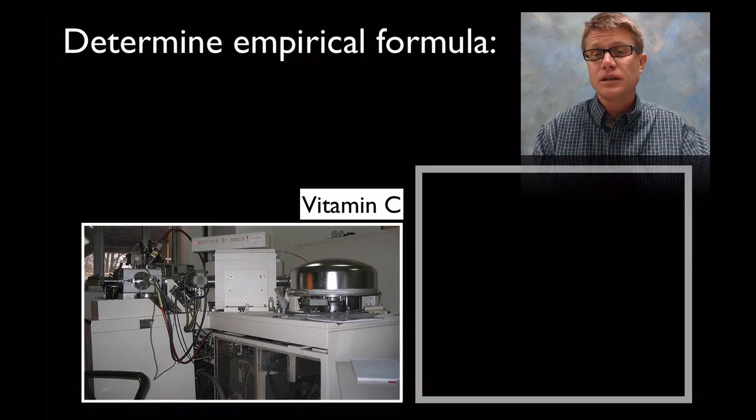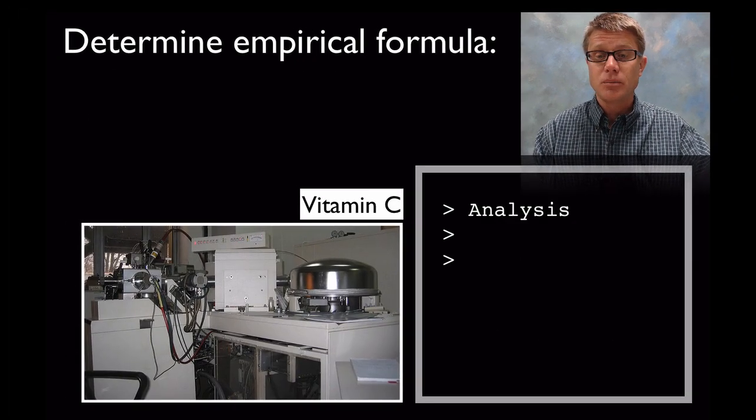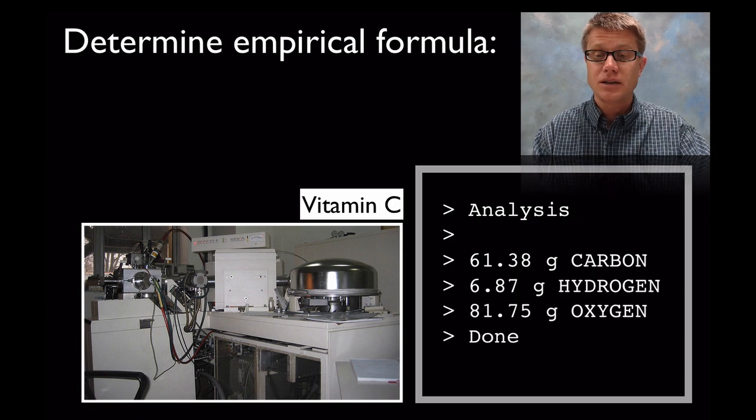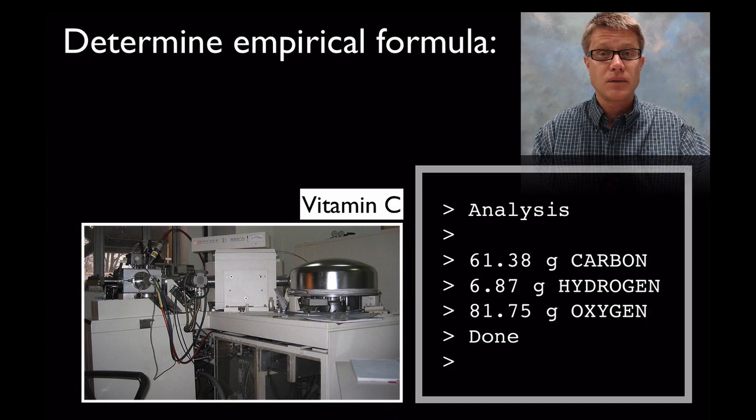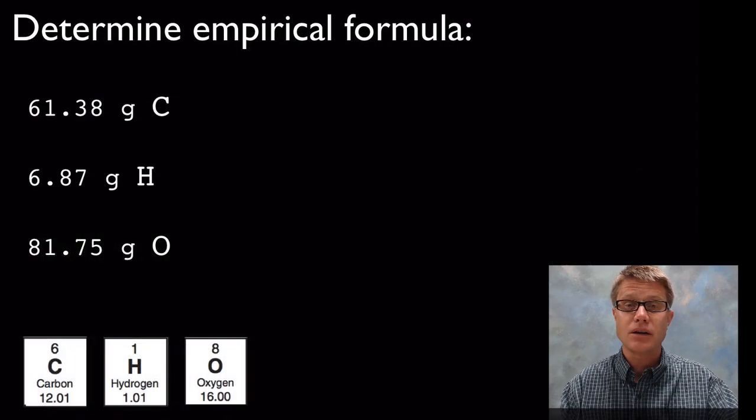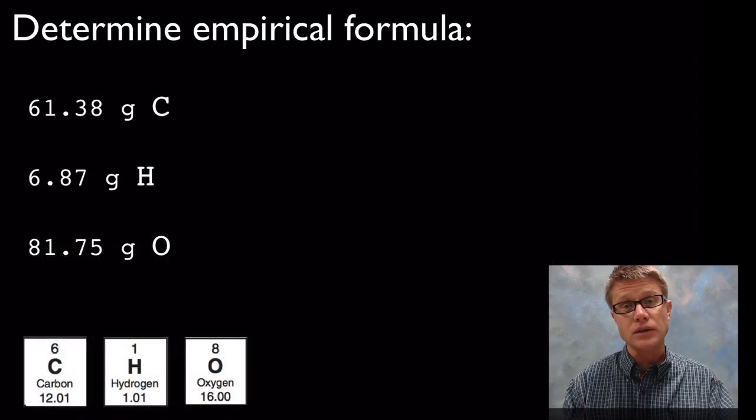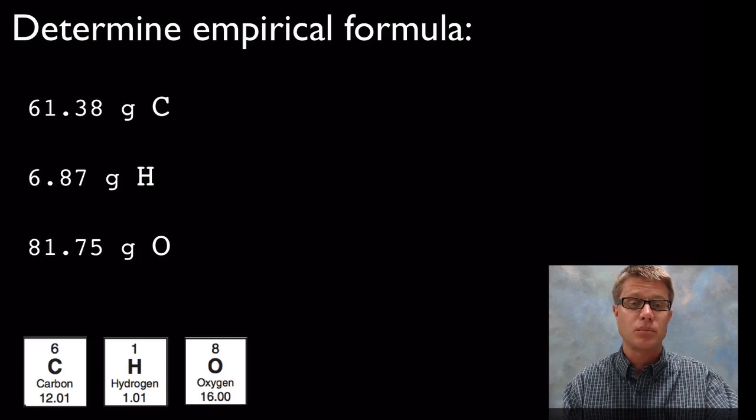So let's go back to that problem again. Let's say we're given some vitamin C. We put it in a mass spec and we get this data out of it. What is that telling us? It's telling us the percent of each of those inside there. And so what we could do, let's throw that data out here, is we can convert it to moles. And once we have it in moles we could figure out the empirical formula.